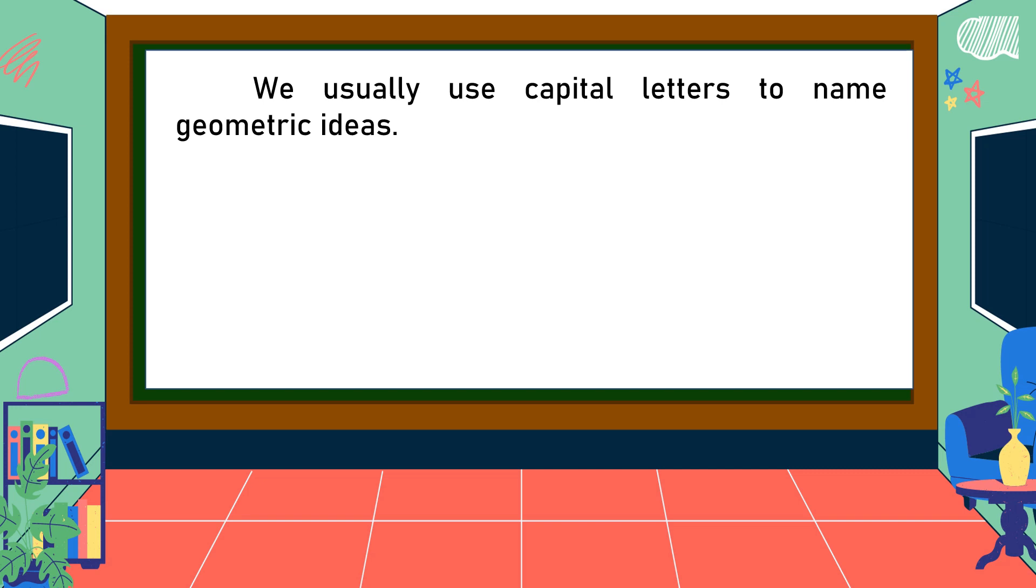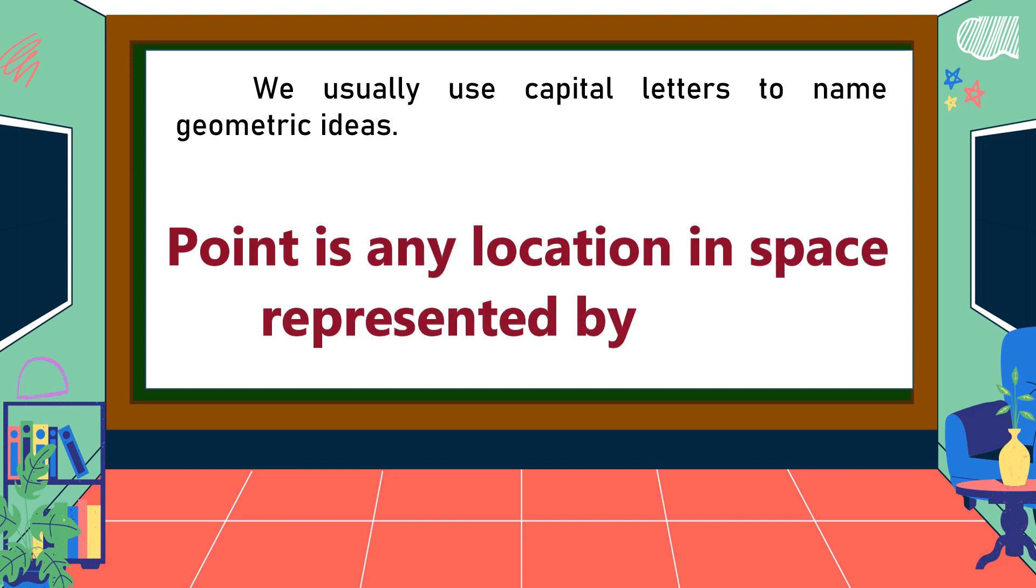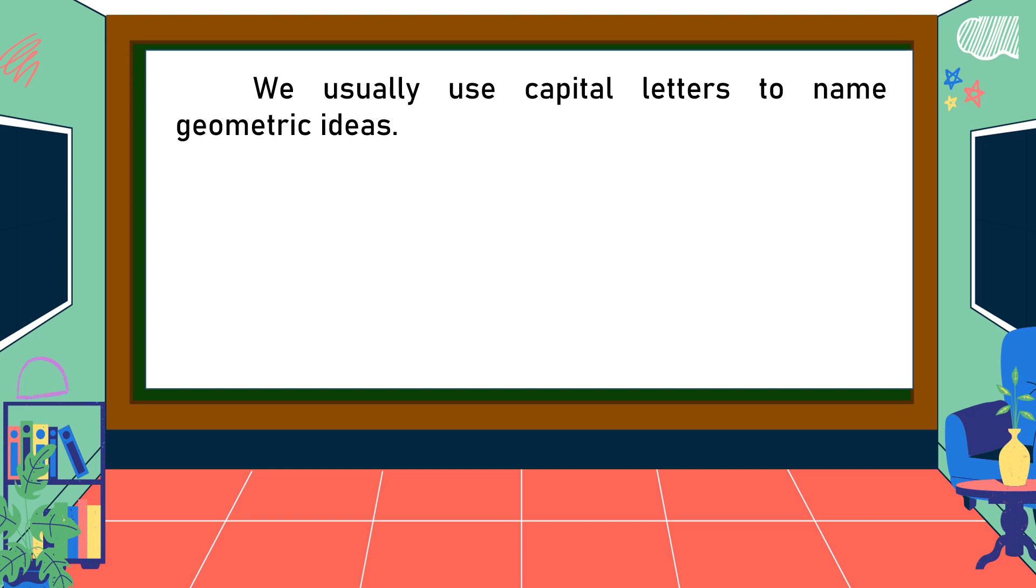What is a point? Point is any location in space represented by a dot. We have the following models of points: point A, point C, and point X. In this figure, the vertices are represented by a point.